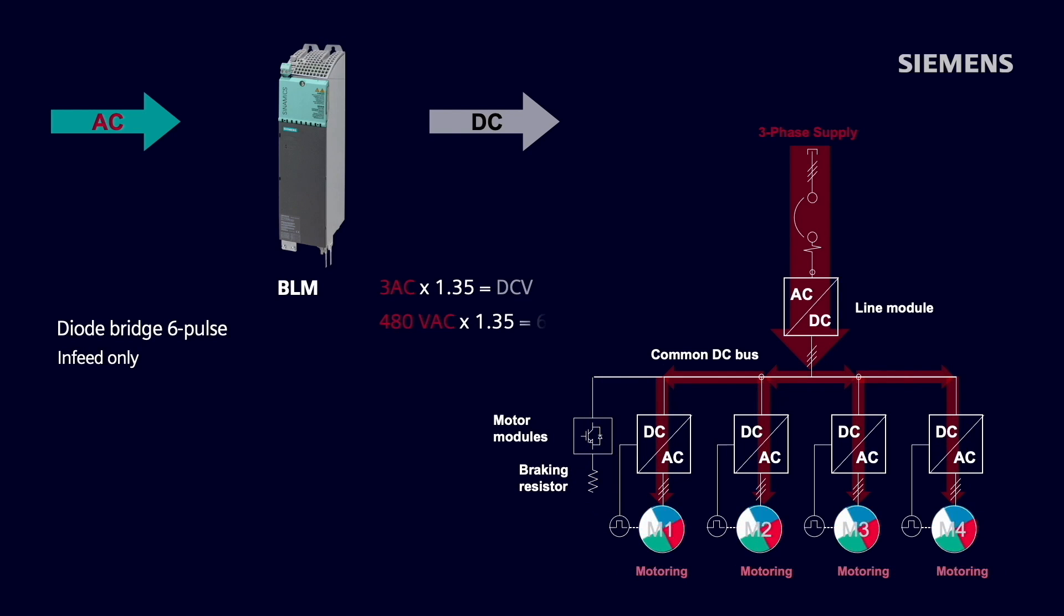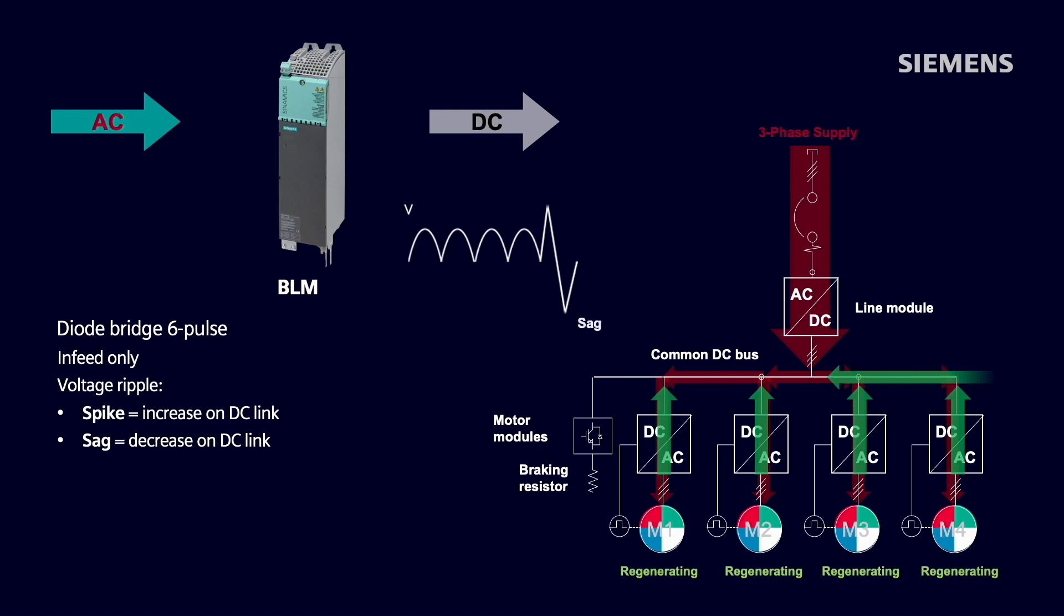With a 480-volt three-phase infeed, we'd be powering a 650-volt DC bus, which would have a certain amount of voltage ripple on it from the diode bridge. If we have load hits on the motor or voltage sags on the incoming power, we would see a decrease on the DC link. And vice versa, if we were regenerating power back to the DC link or we had voltage spikes, we would see an increase on that DC link as well.